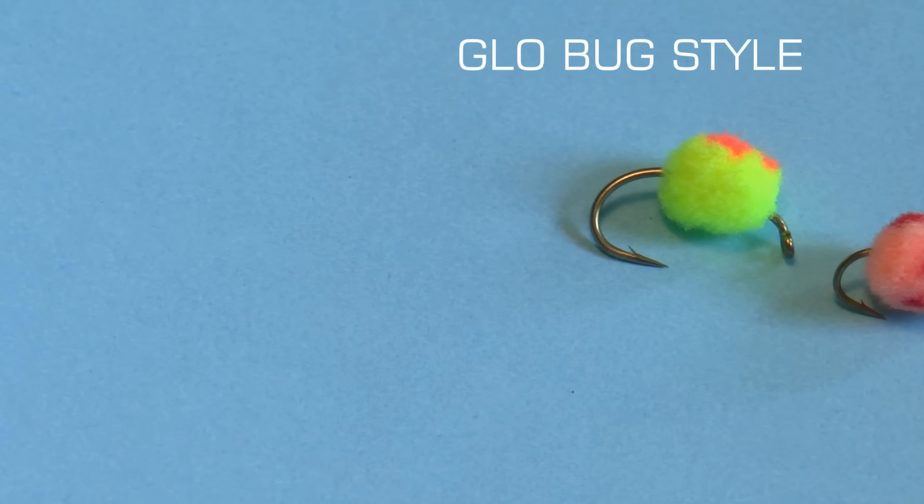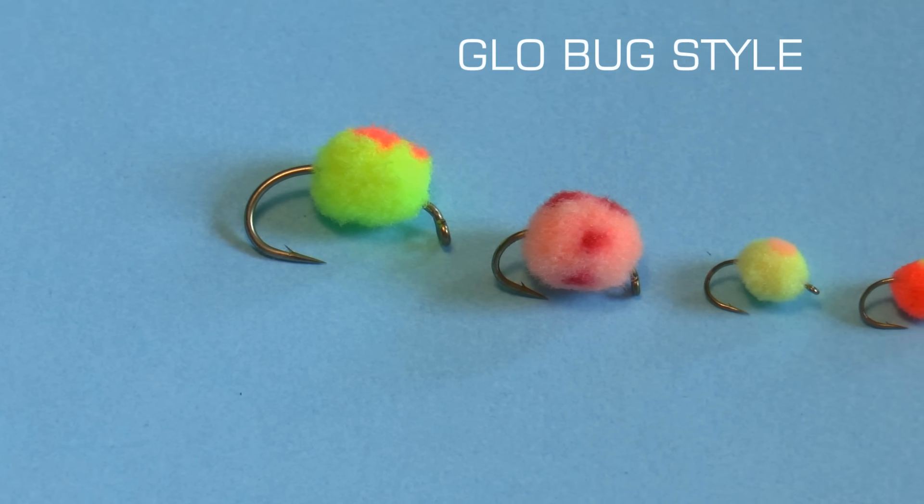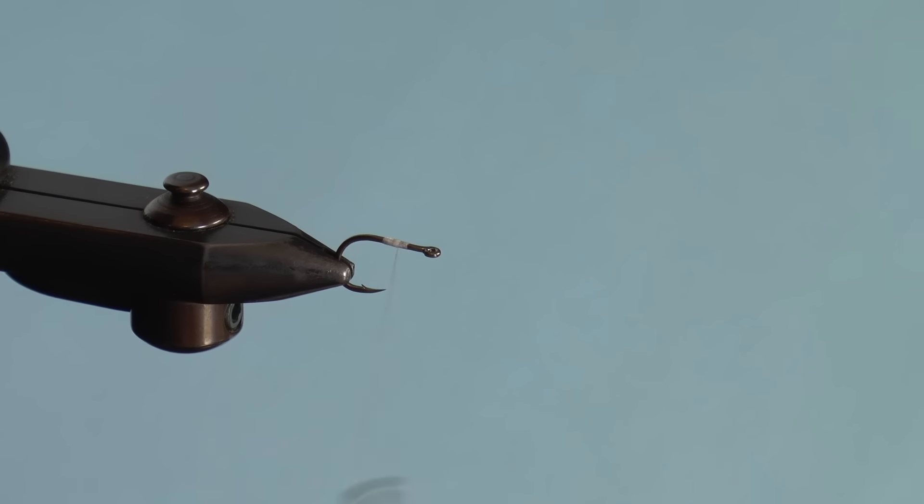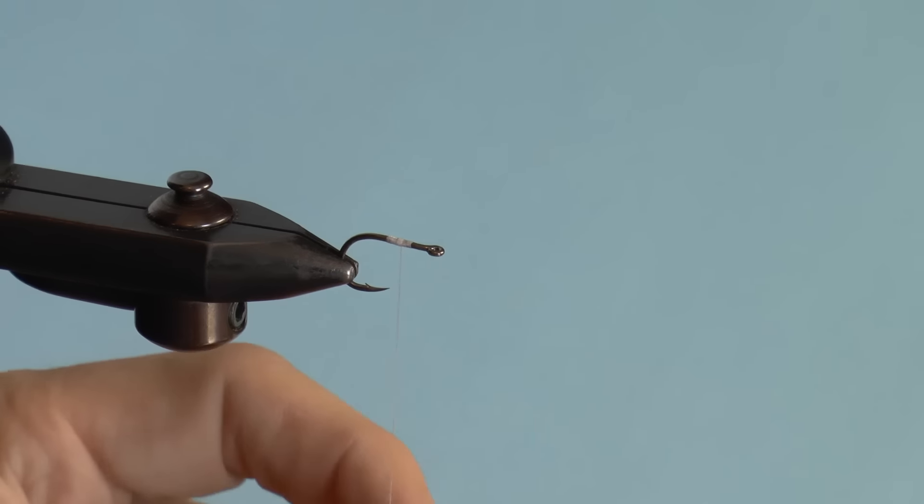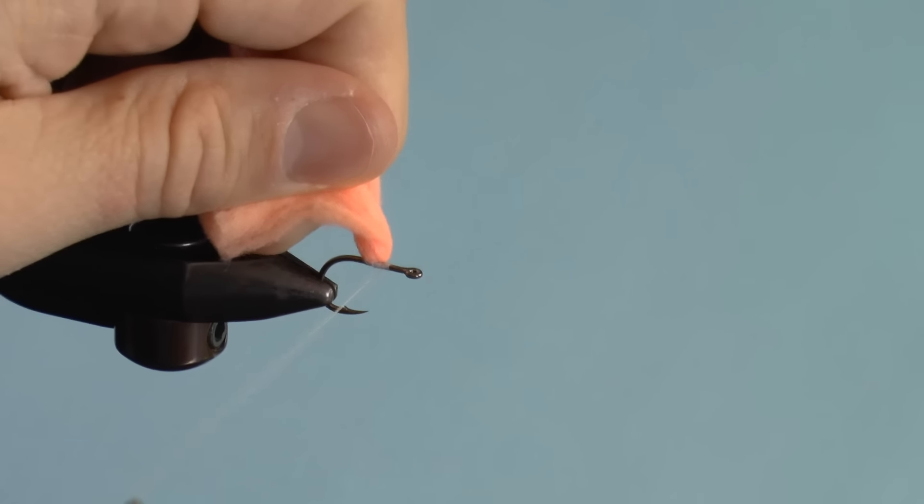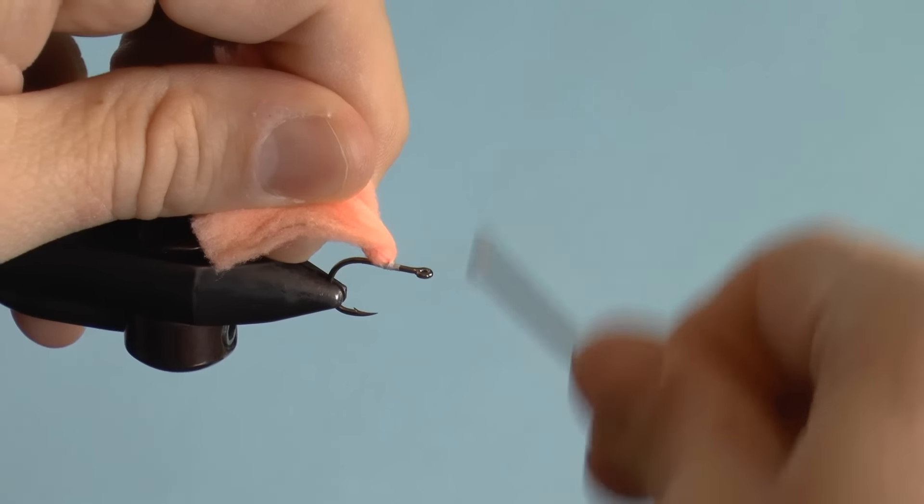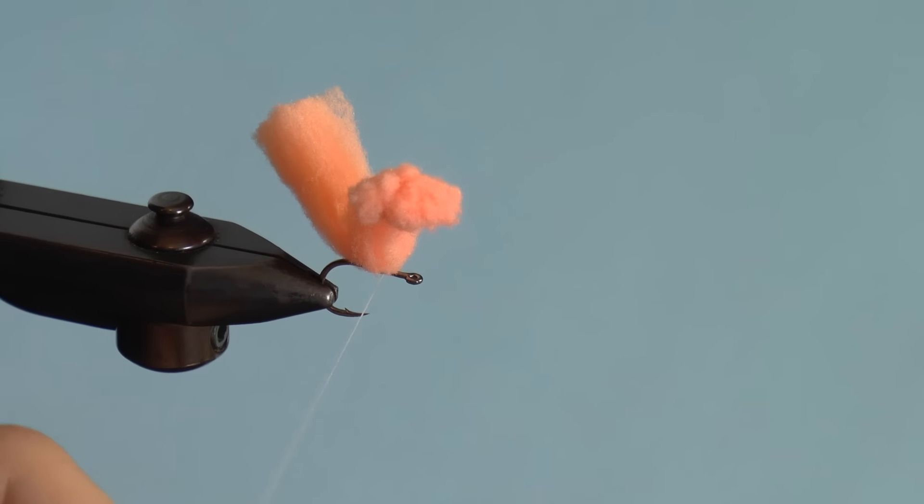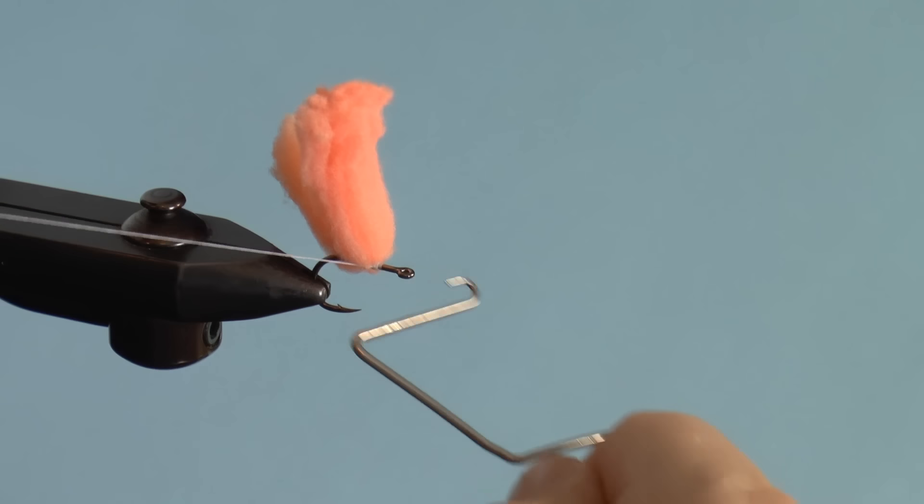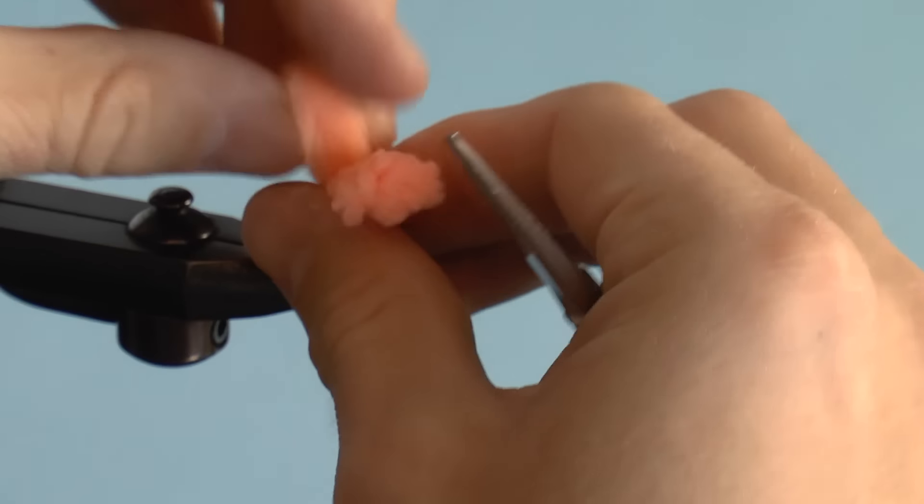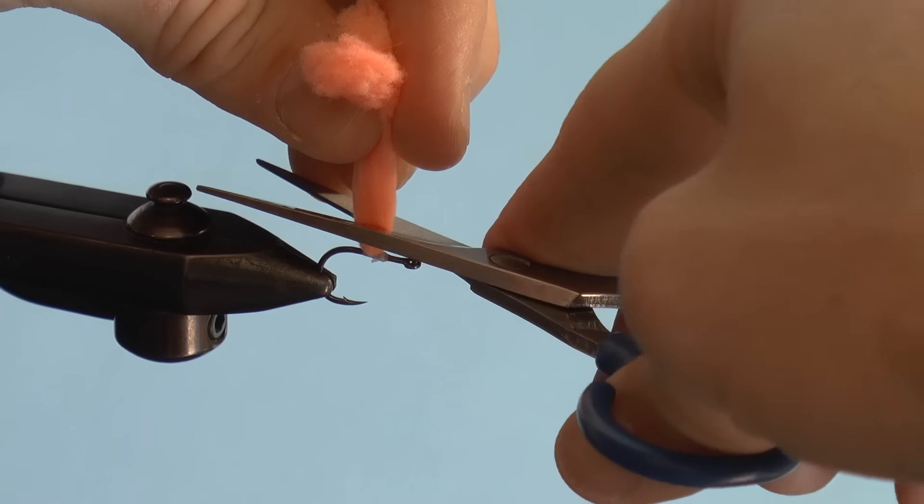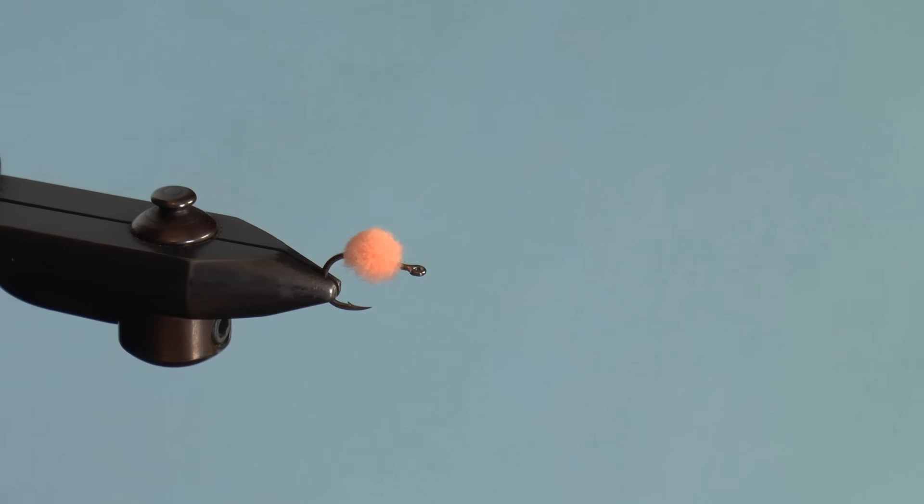First up, glow bug style. Start by spinning your thread clockwise. Now take a section of egg yarn and place it over the thread and move it up to the hook. Tighten down with thread wraps, then twist the yarn so that it lies across the hook. You can repeat this process on the bottom if you like, but now whip finish and tie off. Pull the yarn tight and make a slight twist, then cut the yarn. The higher you cut, the bigger and less dense the egg. You can add a piece of egg yarn in the middle to form a dot before you cut, or go ahead and make a dot by hand with a marker.